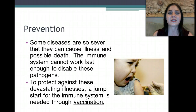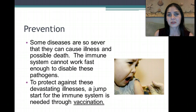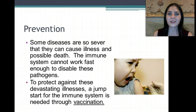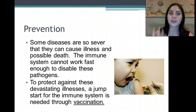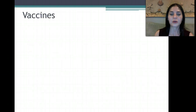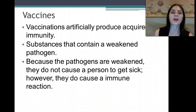So how do we prevent some of these diseases from occurring? Some diseases are so severe they can cause illness and possible death, and the immune system can't work fast enough to disable some pathogens. To protect us against those pathogens, we need a jump start — and that's what a vaccine is. Like I mentioned, I got my flu shot this past Sunday so my body has a jump start in case I'm exposed. Vaccinations artificially produce acquired immunity.